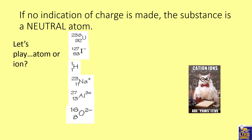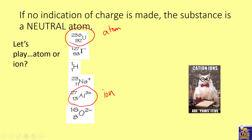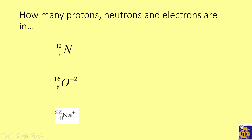When you see isotope symbols, you need to decide: is it an atom or an ion? If you don't see any charge, it's an atom. If there's a charge shown, it's an ion. You can also identify it as a cation if it's positive.